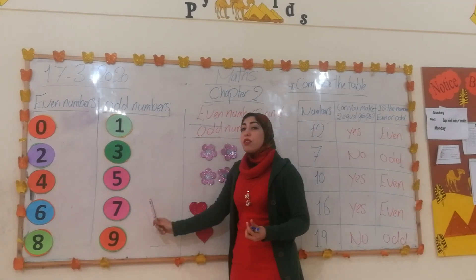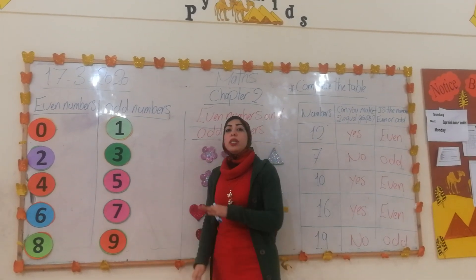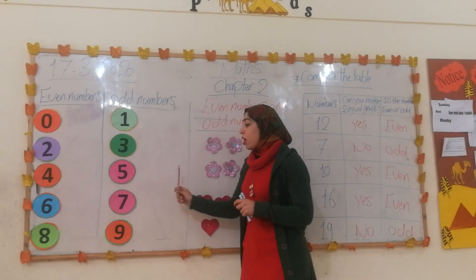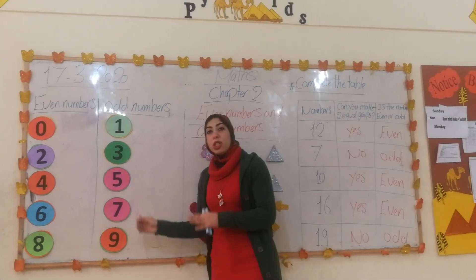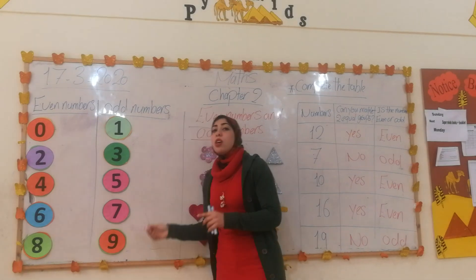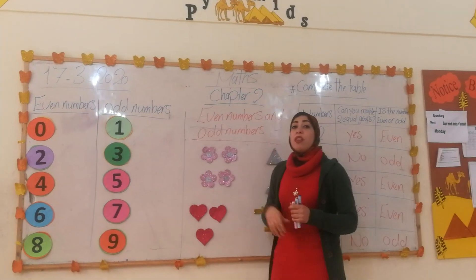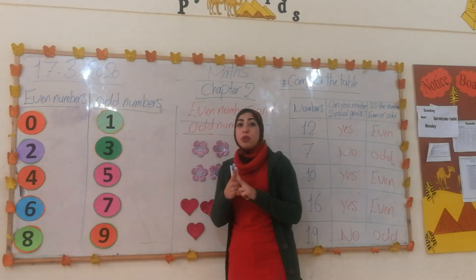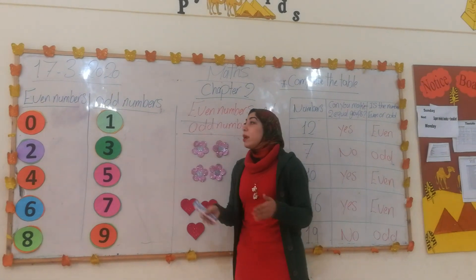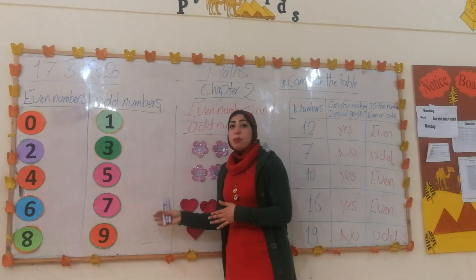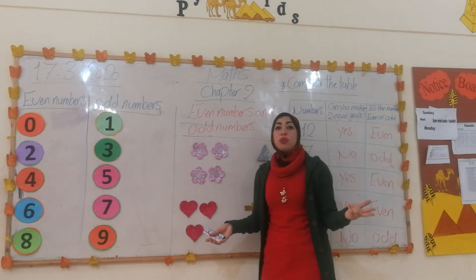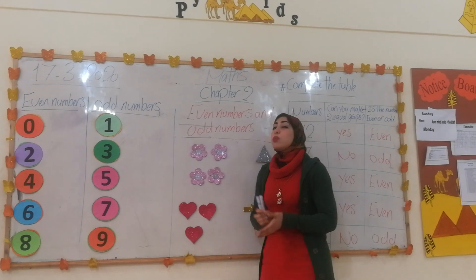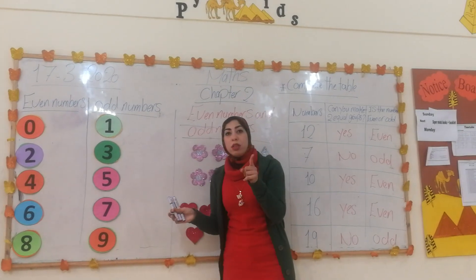Odd numbers — like what? 1, 3, 5, 7, 9, or any numbers ending in these. The other group — 1, 3, 5, 7, 9 — is called odd numbers. Even numbers we can divide into two equal groups without remainder. But odd numbers we can't divide into two equal groups, because we still have a remainder of 1.